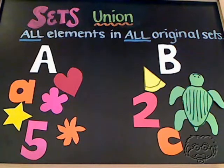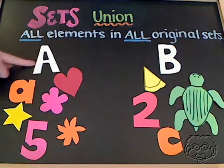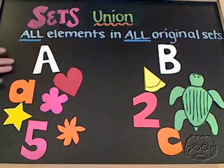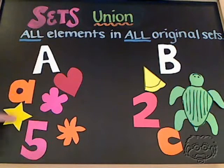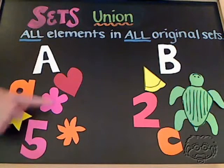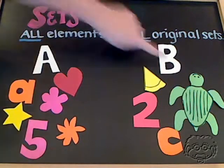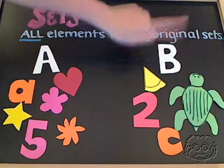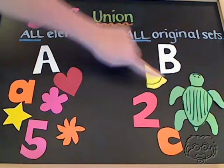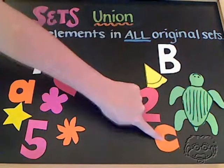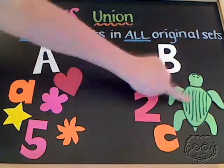For instance, if we have set A, which contains all the elements you see here — lowercase a, star, 5, pink flower, orange flower, and heart — and you have set B, which contains banana cream pie, 2, lowercase c, and a turtle.